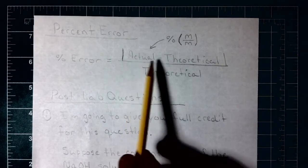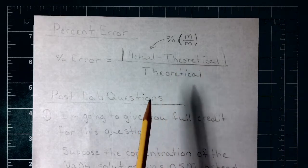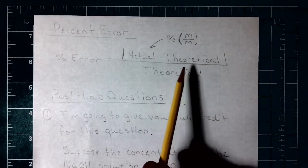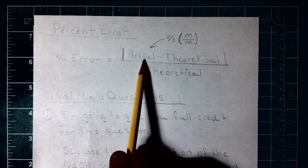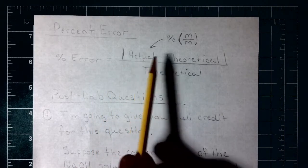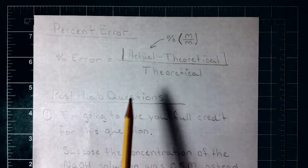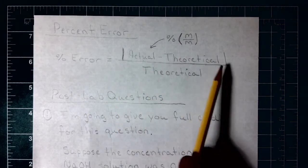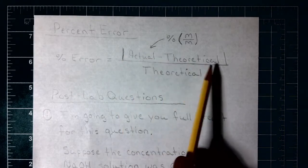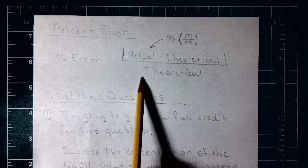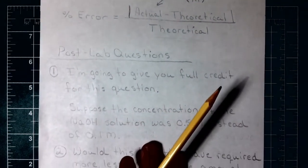They're going to give you the theoretical value — it's in a bold statement right underneath the question. We calculate percent error the way we have been doing it: take the actual value (the mass percent we calculated) minus the theoretical value they give you, take the absolute value of that, and divide by the theoretical concentration.